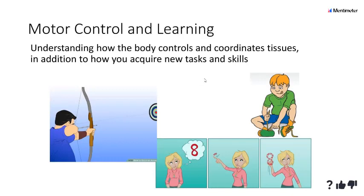The next area is motor control and learning — merging what's happening in the brain with what's happening in the body. We'll look at cognitive performance: subconscious mechanisms outside our control and conscious mechanisms within our control. Essentially, how do we go from a thought to an actual physical movement? Understanding hand-eye coordination and performance under pressure brings us into sports psychology.